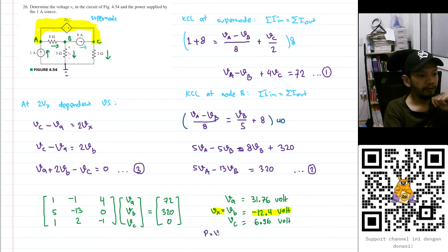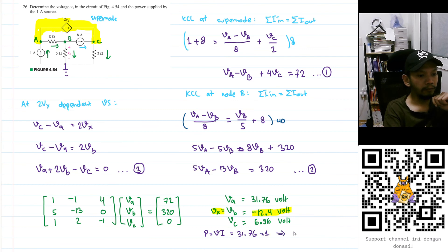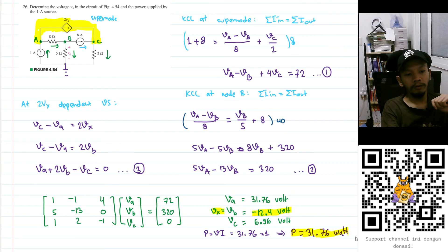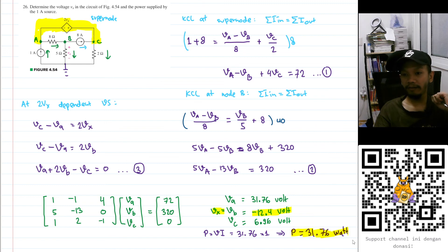For the power supplied by the 1 ampere current source, the power equals voltage times current. The voltage at that node is Va = 31.76 V, and the current is 1 ampere, so the power supplied is 31.76 W. Hopefully there are no calculation mistakes — thank you for watching, and please like and subscribe!